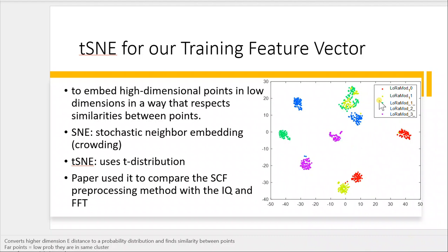It calculates the distance between one point and another, and then it translates this distance into a probability according to a probability distribution. For example, t-SNE uses the t-distribution.